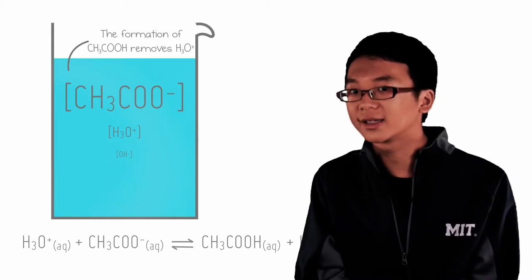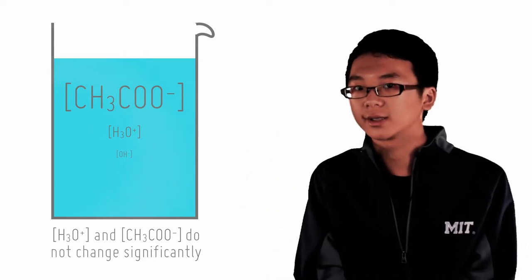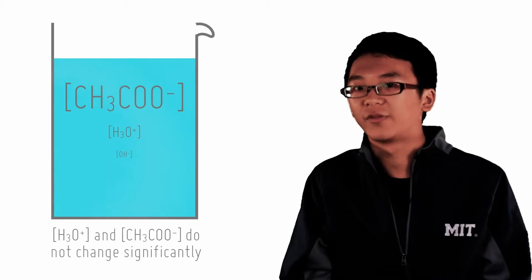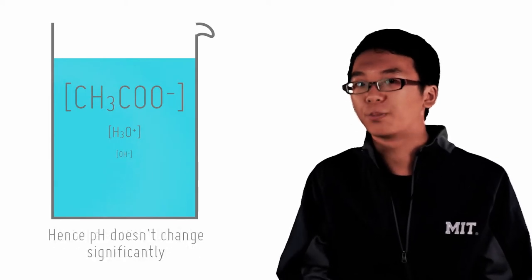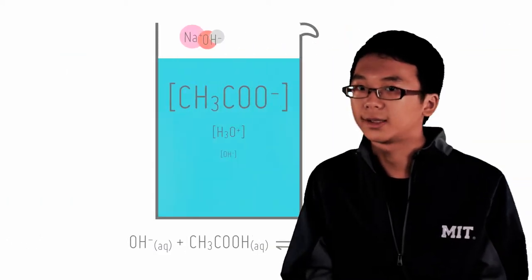As a result, the conjugate base in this case, acetate, can mop up trace amounts of hydronium ions to form acetic acid without its own concentration being significantly affected. And this is how it buffers the pH against fluctuations. What if we add a base, though?